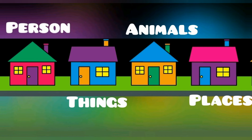Once more I am repeating that video. Look at these houses. Here we have four houses. You know the names of these houses. The first house is the person house. This house has all the names of people, and they can be names of our relatives, professions, or any person.